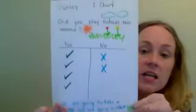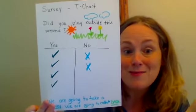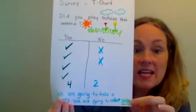So when we collected this pretend survey data, we said four people went outside. How many people didn't go outside? Two people stayed inside. Let's record those numbers: four people played outside and two people did not play outside. That's our data — we have six data points.